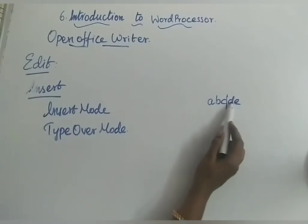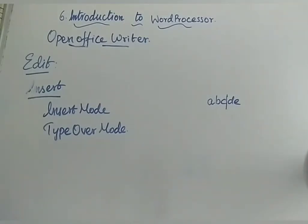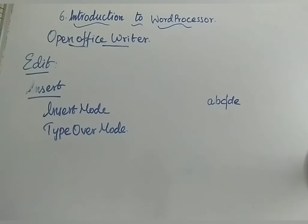The next mode is Type Over mode. To switch to Type Over mode, press the Insert key again. The first press of Insert activates Insert mode; pressing it again moves you to Type Over mode. So these are the two ways to insert text in between: Insert mode (by pressing the Insert key) and Type Over mode (by pressing the Insert key again).